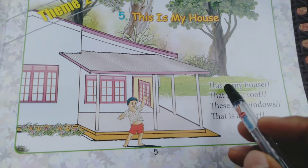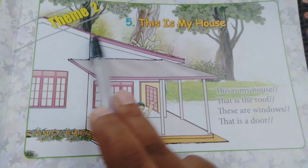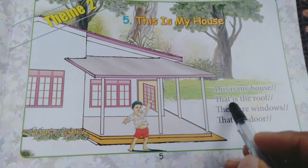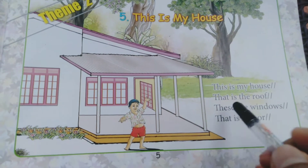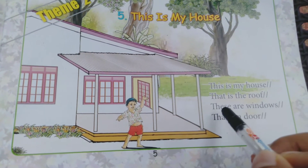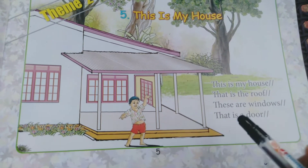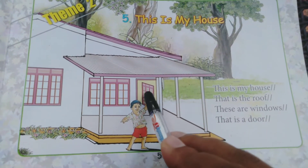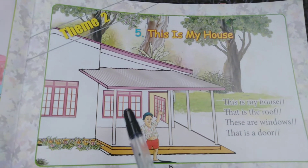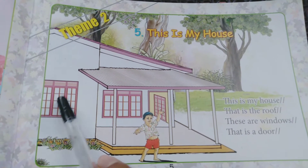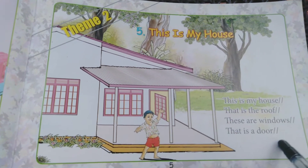This is my house. That is the roof. You can see the roof here, the windows here, and that is the door.